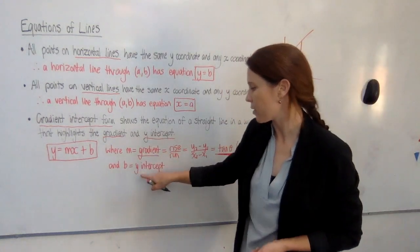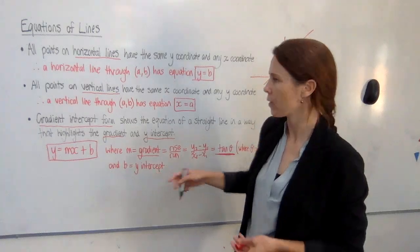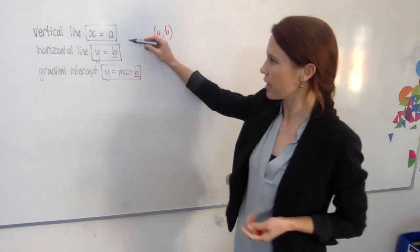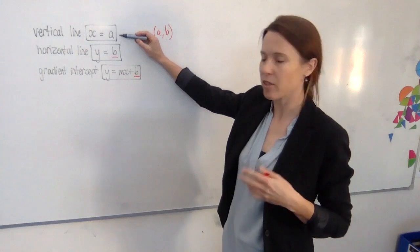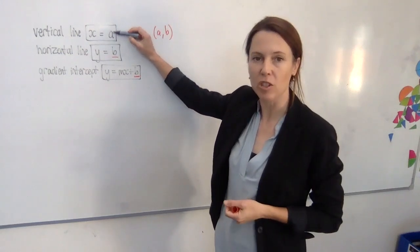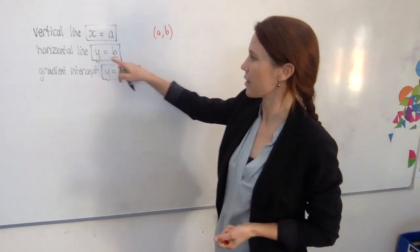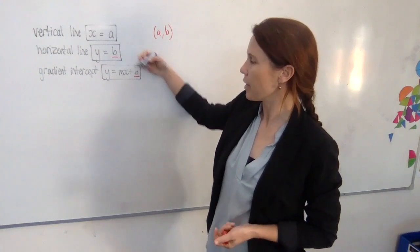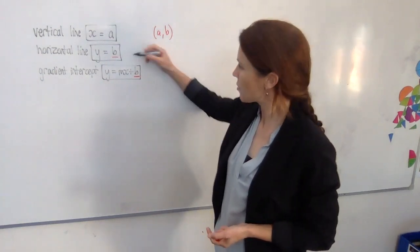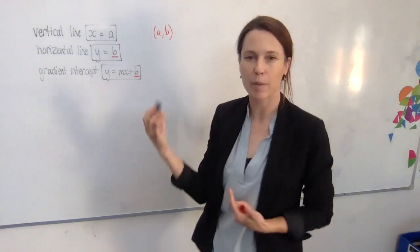And we know that b is just the y-intercept. Now, before we go any further, let's just consider what we've learned here. A vertical line has equation x equals something. It's just a number. And a horizontal line has an equation y equals something. And our gradient intercept form looks like this. Let's just consider these b's. Are they the same thing?